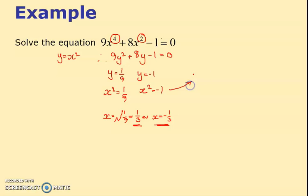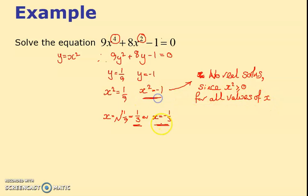This one's slightly different: x squared is minus 1. I'm going to write no real solutions, you can't square root minus 1, since x squared is greater than or equal to zero for all values of x. When they introduced the new exam regime they started insisting you write this kind of thing to explain why this has no solutions. My answers are plus a third and minus a third.